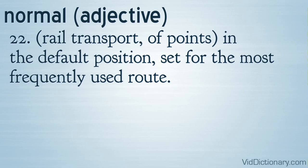Definition 22: Rail transport — of points, in the default position, set for the most frequently used route.